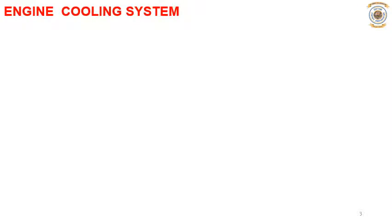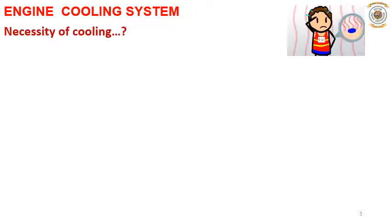Before going to see what are the types of engine cooling system, we will see the necessity of engine cooling system. We know that in an IC engine the temperature of the gases inside the engine cylinder may vary from 35 degrees centigrade in a lesser case, and as high as 2750 degrees centigrade during combustion of diesel fuel, where a high amount of heat is released.